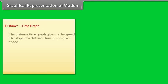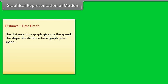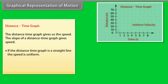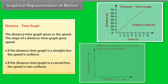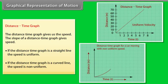The distance-time graph: the distance-time graph gives us the speed. The slope of a distance-time graph gives speed. If the distance-time graph is a straight line, the speed is uniform. If the distance-time graph is a curved line, the speed is non-uniform.